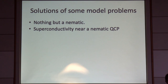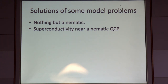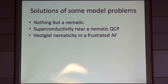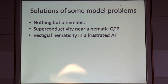Then I will take that problem and couple it to electrons and examine the occurrence of superconductivity near the nematic quantum critical point, again in a simple model problem. I'll also talk about this idea — touched upon yesterday — of nematic order arising from the antiferromagnetic correlations in a frustrated quantum antiferromagnet.